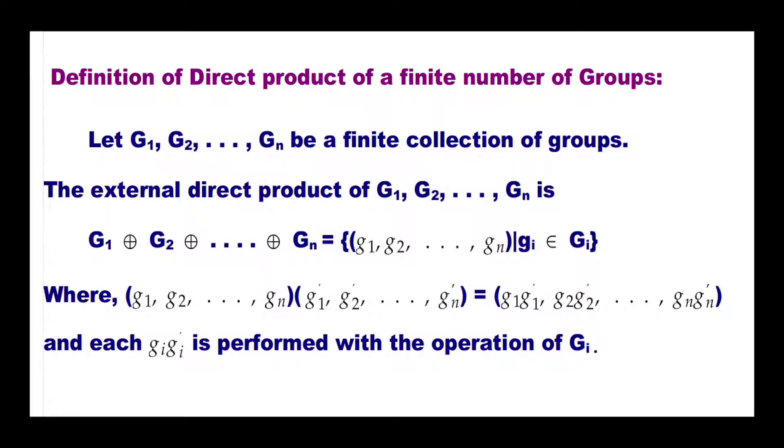In this module, we are going to see the direct product of a finite number of groups — specifically, the internal direct product and the external direct product — and some of the results related to these two direct products. Particularly, we will see the condition under which the internal direct product will be isomorphic to the external direct product. Let us now see the definition of the direct product of finite number of groups.